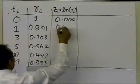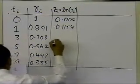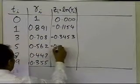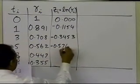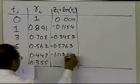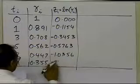And those turn out to be 0, minus 0.1154, minus 0.3453, minus 0.5763, minus 1.0356, and that's about it.